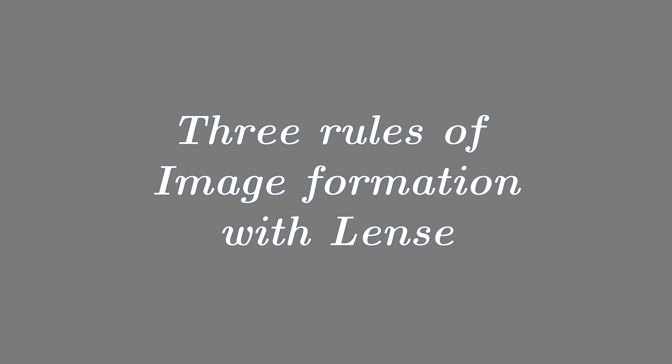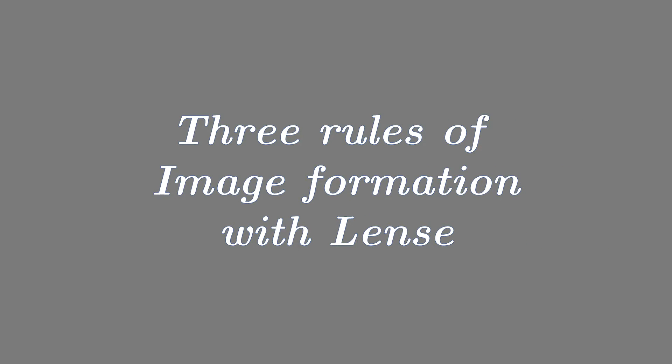Now I am going to explain the three rules which are used to obtain image with the help of lens, convex lens and concave lens. Here is rule number one.